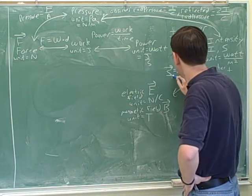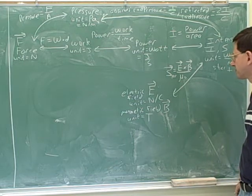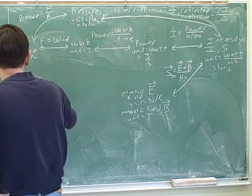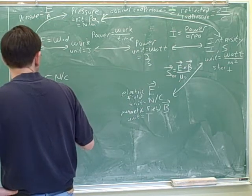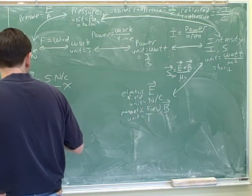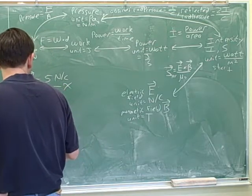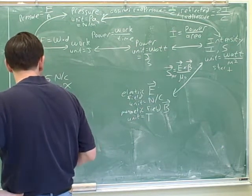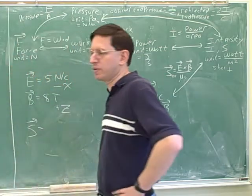But the Poynting vector itself, so I'll put P-O-Y for Poynting vector. Obviously, that's a vector. So, let's do a little sample problem there. If the electric field is 5 newtons per coulomb in the negative x direction, and the magnetic field is 8 tesla in the z direction, the positive z direction, let's calculate the Poynting vector.